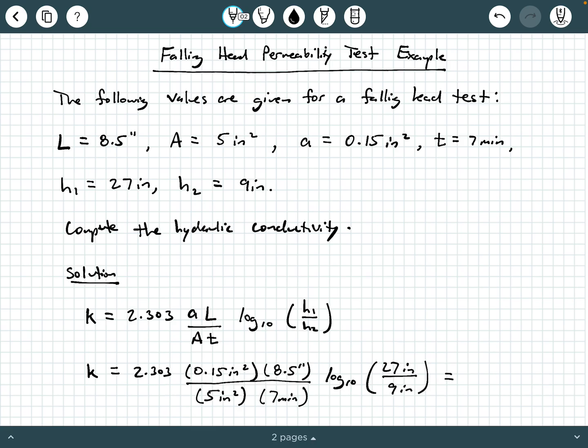So we can punch this through in our calculators. I'm going to punch this through in my TI-36X Pro. So let's go ahead and start cranking things through and we're going to have the 2.303 multiplied by 0.15 multiplied by 8.5 and we're going to divide by 5 times 7 and then we've got the log base 10 in there. So I get 0.04003 inches per minute.